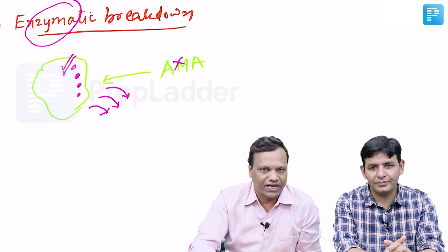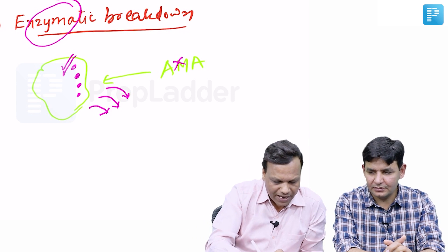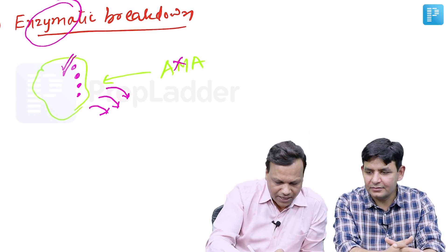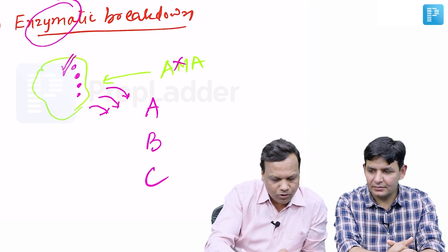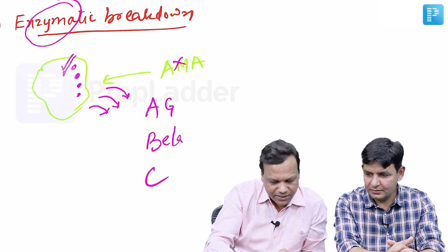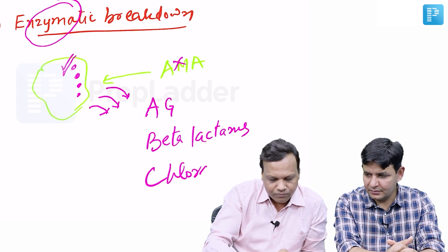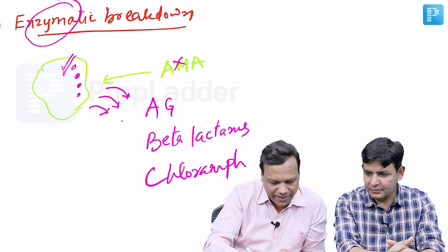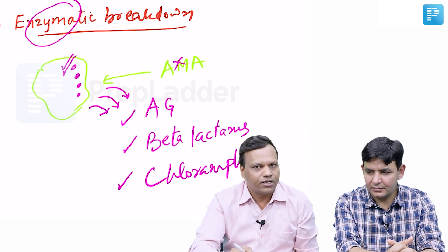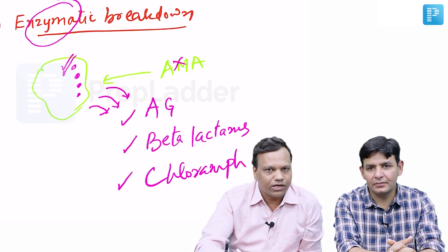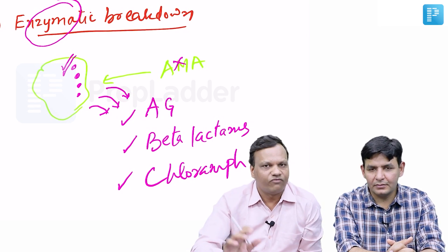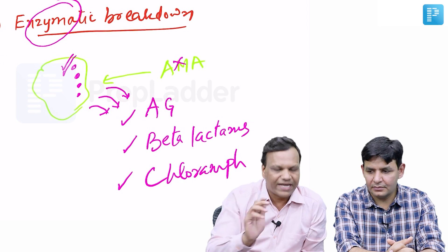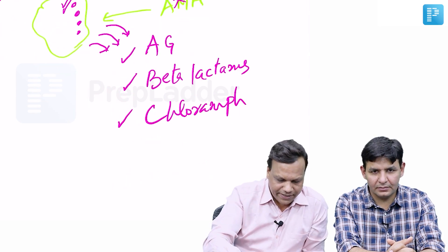You can easily remember which antibiotics develop resistance due to bacterial enzymes using the mnemonic A, B, C: A for aminoglycosides, B for beta-lactams like penicillinases — penicillins, cephalosporins, etc. — and C for chloramphenicol. These are the three main antibiotic classes where drug resistance can occur due to enzymatic breakdown.